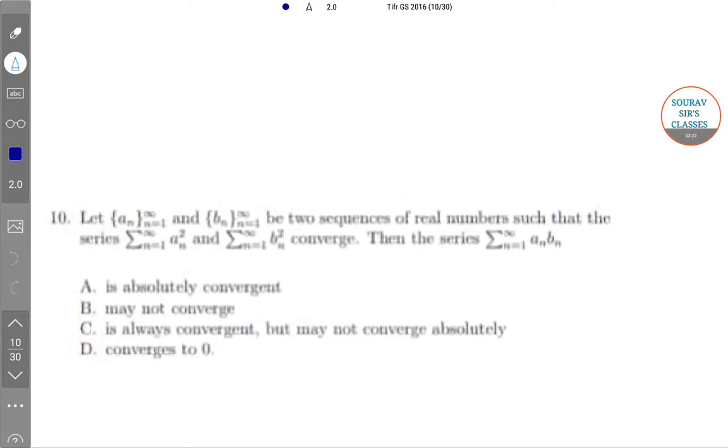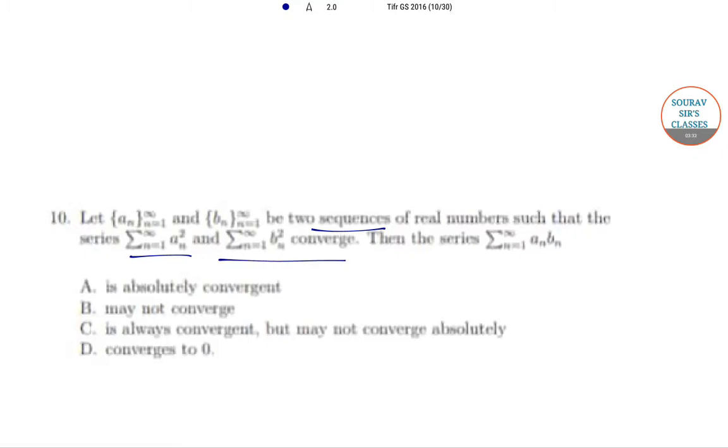The next question is: Let a_n and b_n be two sequences of real numbers such that the series summation a_n squared and summation b_n squared converge. Then the series summation a_n b_n is...